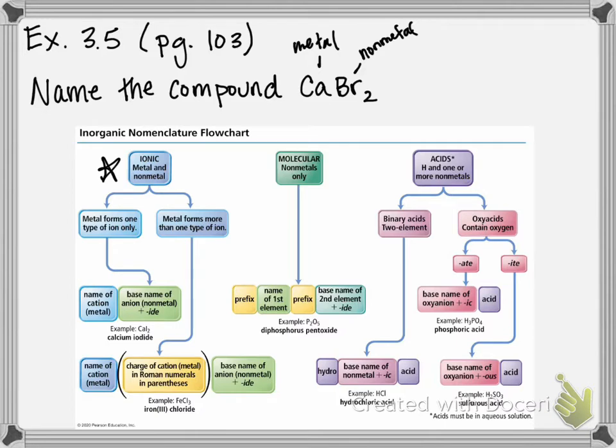Now there are two different ways to name ionic compounds. We can either name it for if our metal only forms one type of ion, meaning it only can adopt one specific charge when it forms an ion. These are going to be the predictable charge metals that we talked about, like the alkali, alkaline earth metals. Or we can name it if the metal is able to form more than one type of ion. So that's going to be pretty much any of your transition metals, and we'll talk about that in a later example.